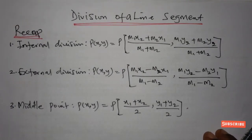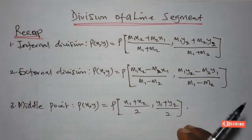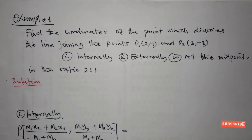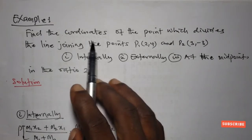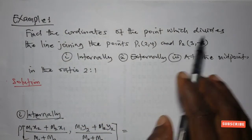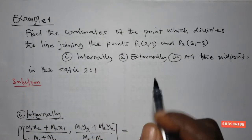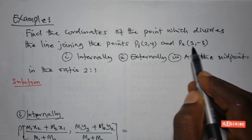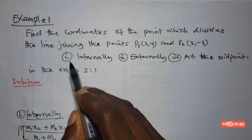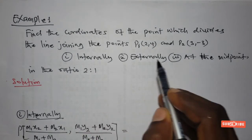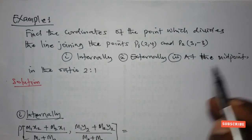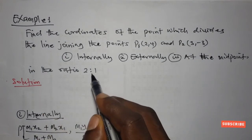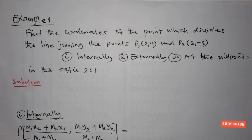In today's lecture we will solve one or two examples to illustrate how these formulae can be applied. Example one: find the coordinates of the point which divides the line joining P1(2, 4) and P2(3, -3) — (I) internally, (II) externally, and (III) at the midpoint — in the ratio 2:1.